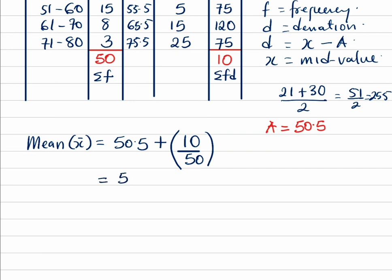Then this is 50.5 plus—this should be 0.5, no I don't think 0.5, that should be 0.2. Sorry for that, it's supposed to be 0.2. So you are going to get 50.7. So this is our mean.